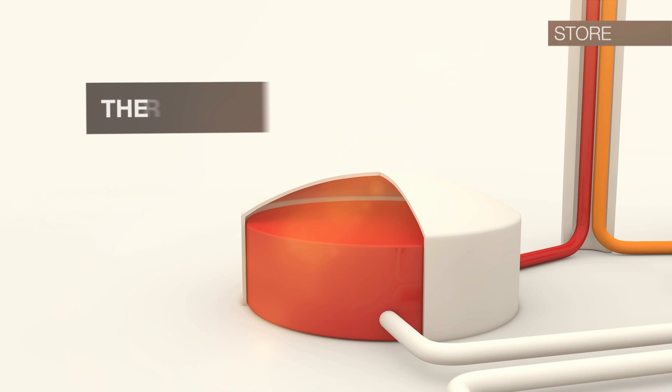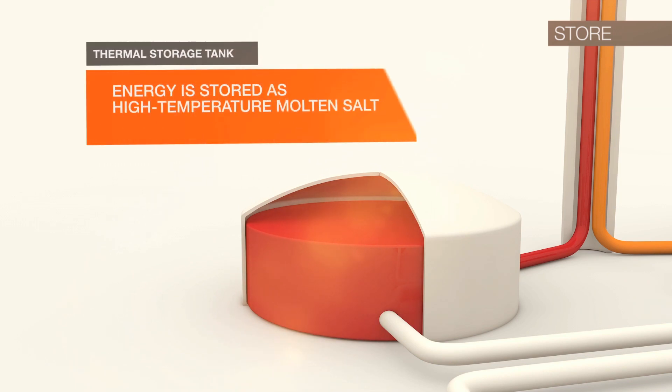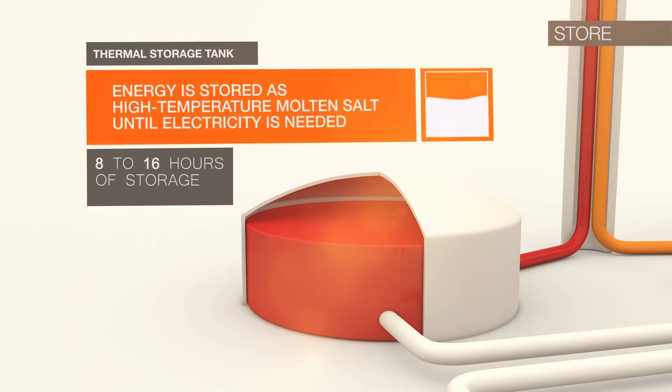After passing through the receiver, the molten salt then flows down the piping inside the tower and into a thermal storage tank, where the energy is stored as high temperature molten salt until electricity is needed.